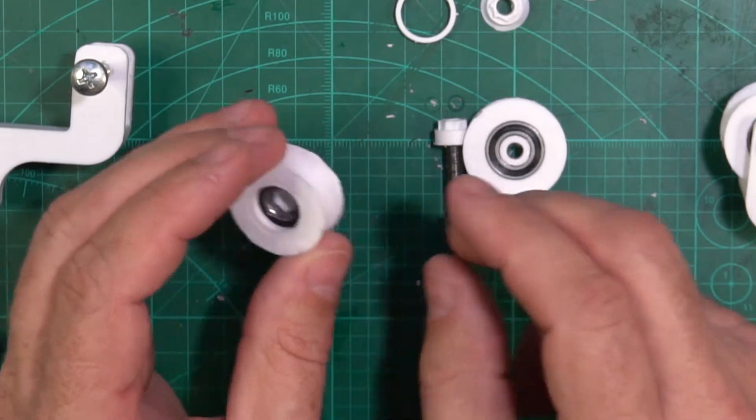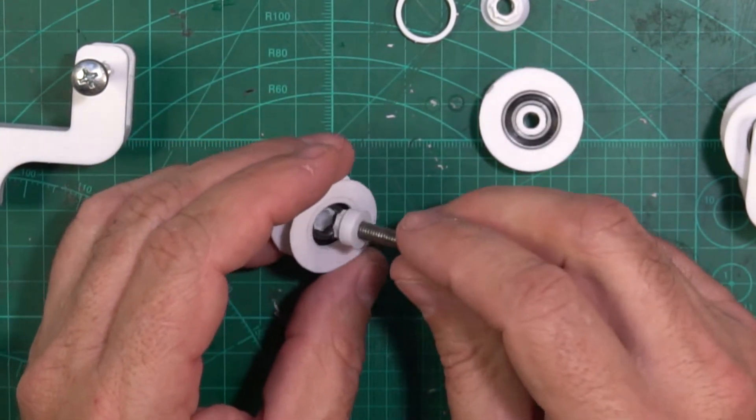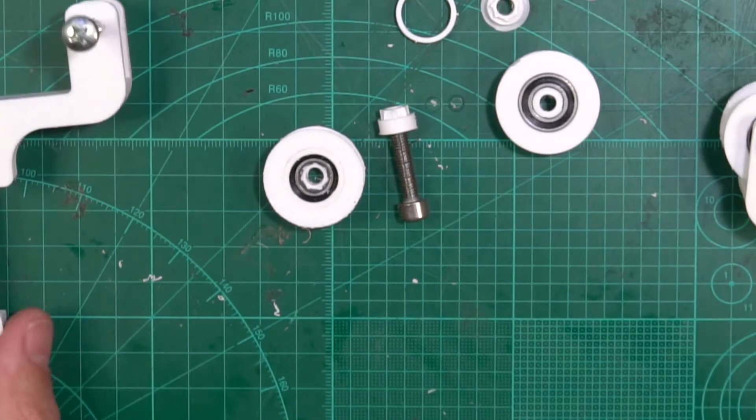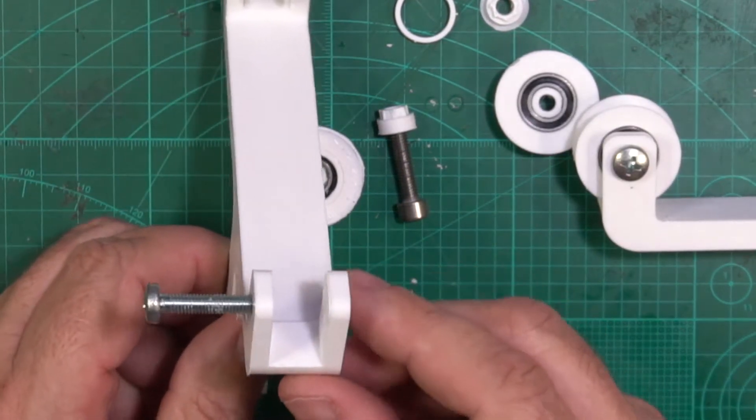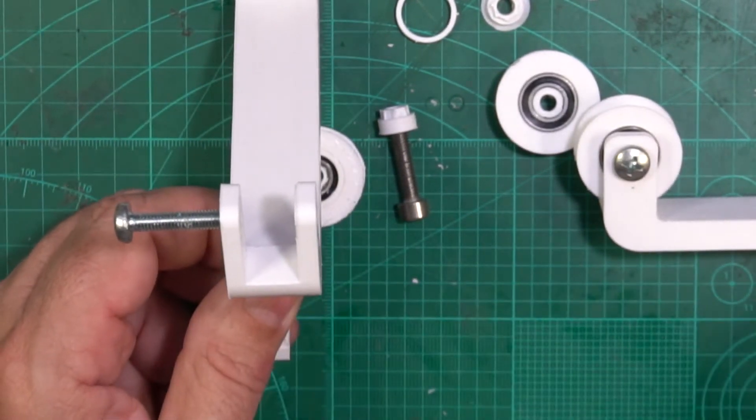So I came up with a single bearing design. It works a lot smoother, so I'll go through how to put together the single bearing design in this video. The only other thing that changed is the frame itself doesn't have the spacers in the inside.